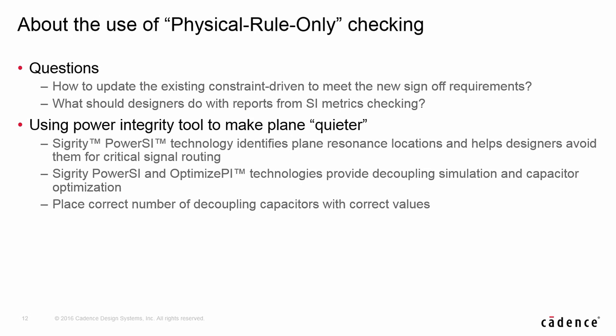The remaining question is: if the constraint-driven flow is still to be valid, what should designers do with the checking results from SI metrics? We should remember the goal of any design checking is to use more detailed simulation tools to evaluate the severity of problems found and for designers to decide if any modification is needed. With power-aware checking, the goal is the same. The SI metrics report sorts out the signals with bad performance, so designers can run detailed simulation with non-ideal power supply, then examine existing decoupling capacitor placement and selection schemes to make the plane quiet — in other words, to make it close to ideal power. When that is reached, the constraint-driven flow becomes complete and signing off is achieved.